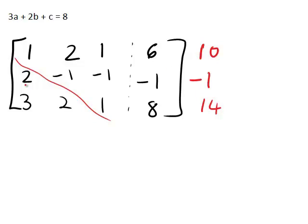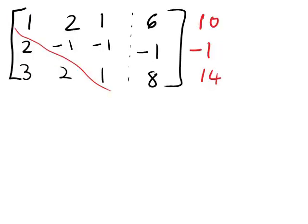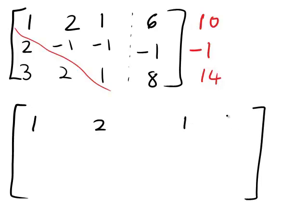Looking at the element two in row two and column one, the corresponding element above it in the first row of the first column is one. So to get a zero, we want two minus two, which equals zero. In other words, we want row two minus two times row one. Writing out our tableau again, the first row still looks the same: one, two, one, six. But for the second row we now use the operation R2 minus two R1, so that each element in row two has two lots of the element above it in row one subtracted from it.